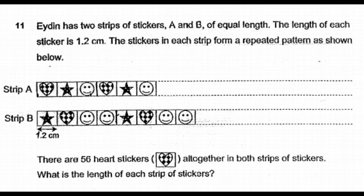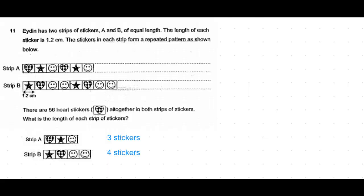There are 56 heart stickers altogether in both strips of stickers. What is the length of each strip of stickers? When we look at Strip A, there are three stickers and it repeats after every three stickers. Strip B repeats after four stickers.